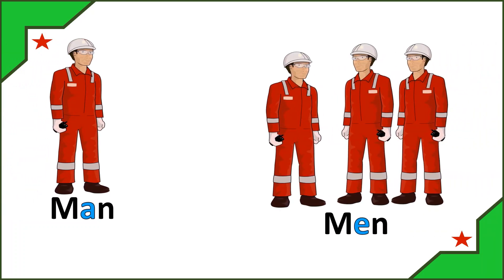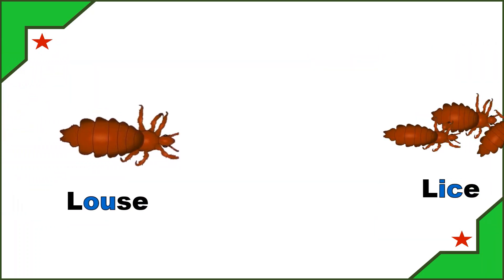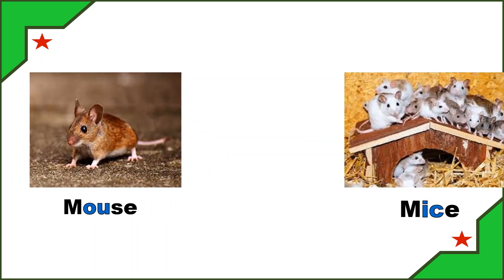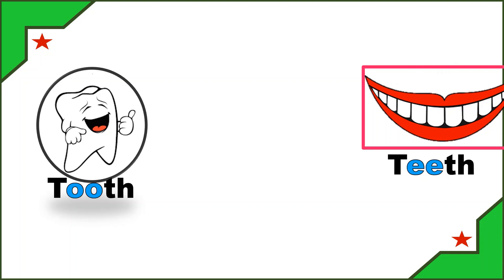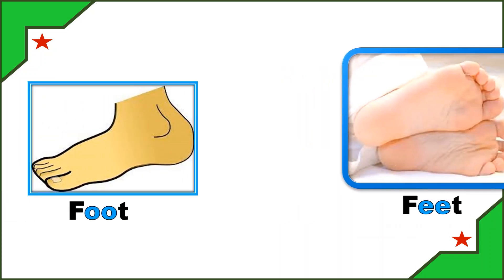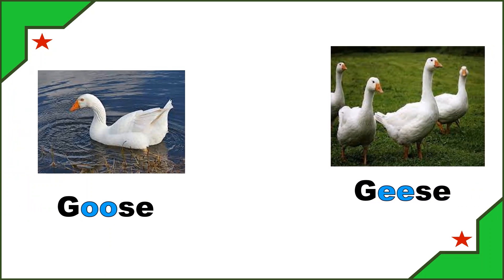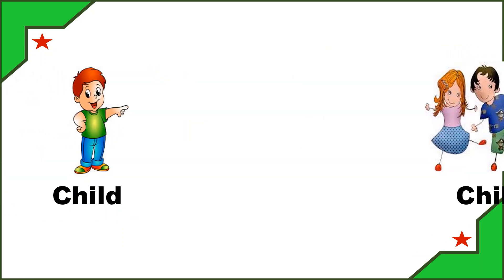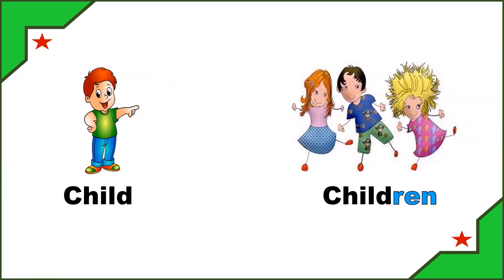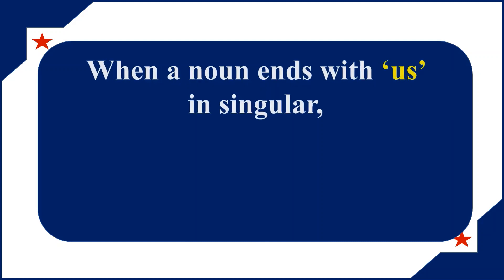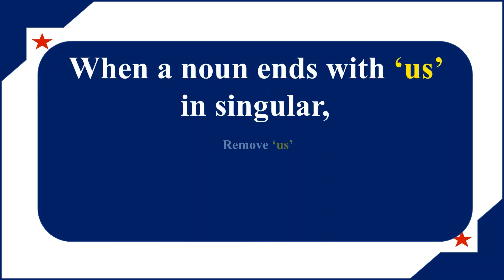Louse → lice, mouse → mice, tooth → teeth, foot → feet, goose → geese, child → children. When a noun ends with the letters '-us' in singular, remove '-us' and add '-i' to get its plural.